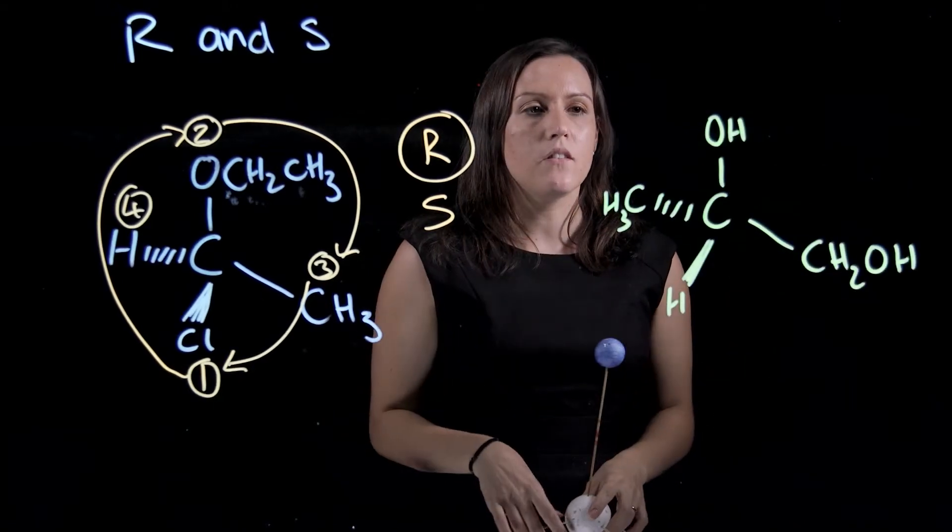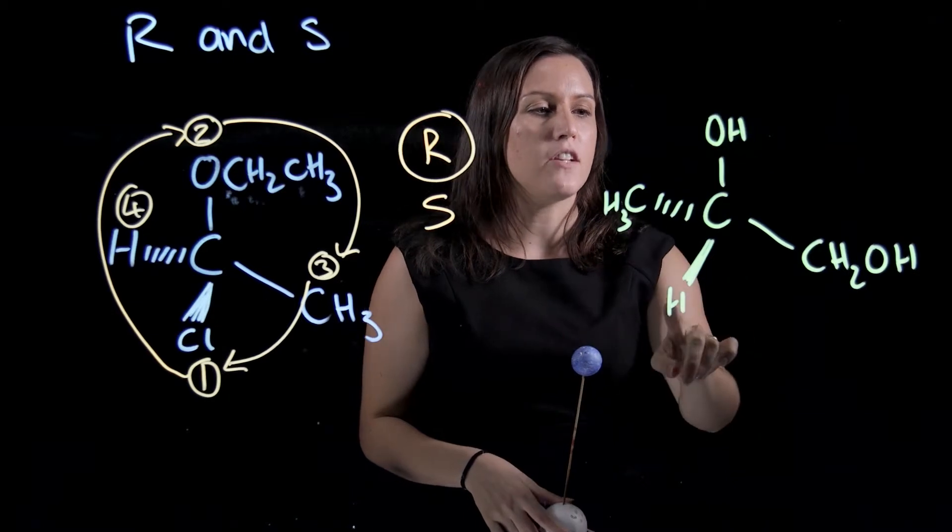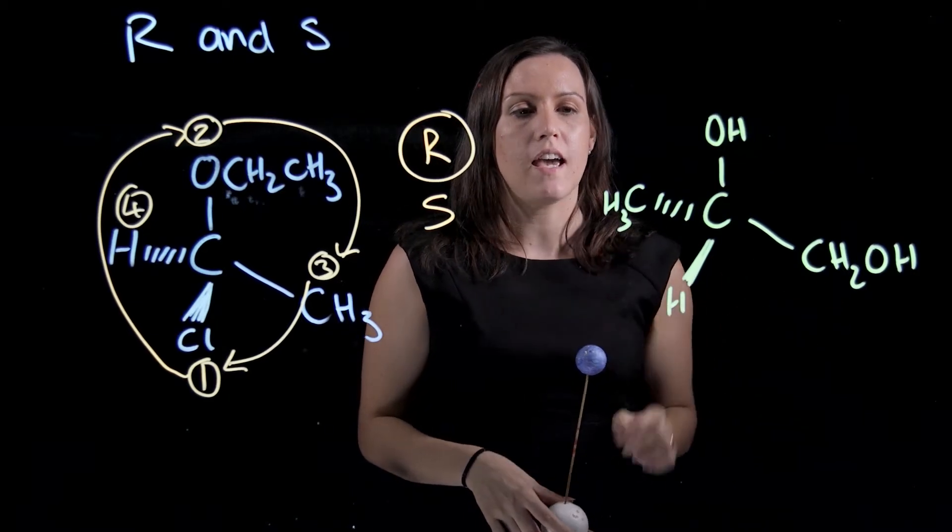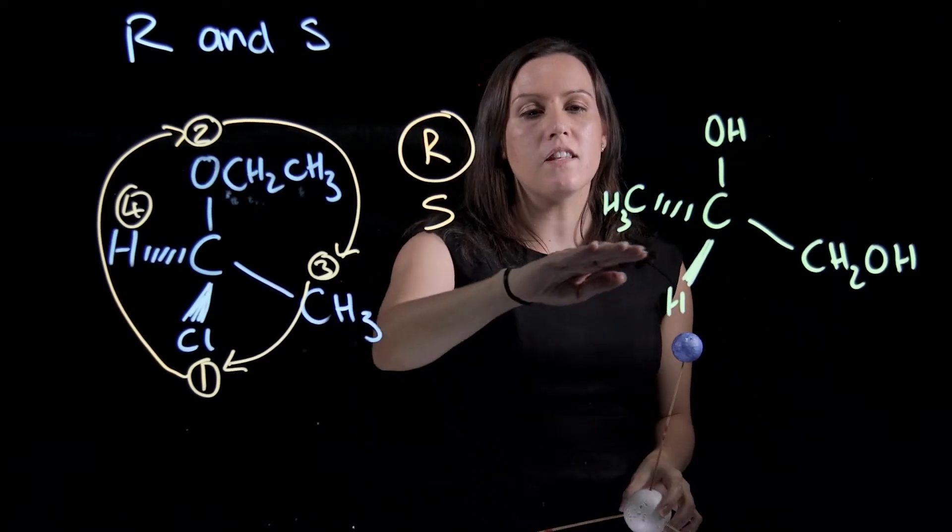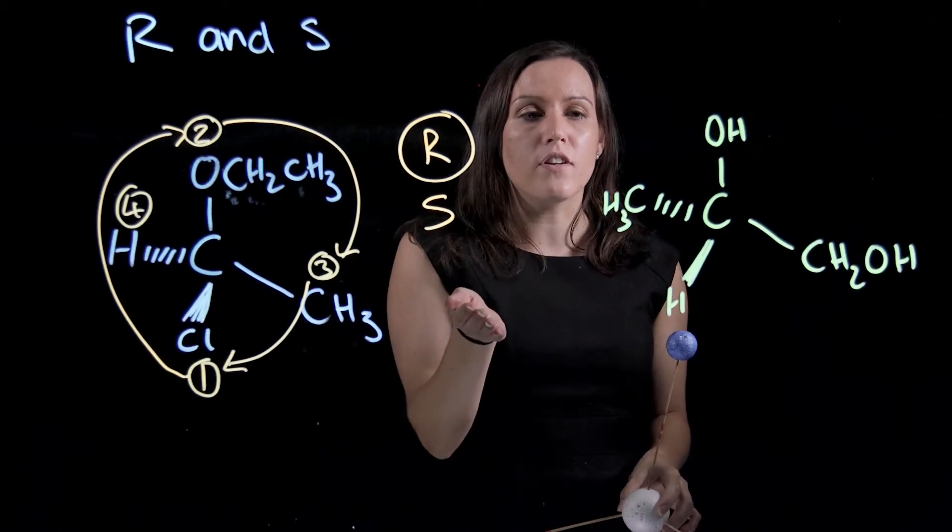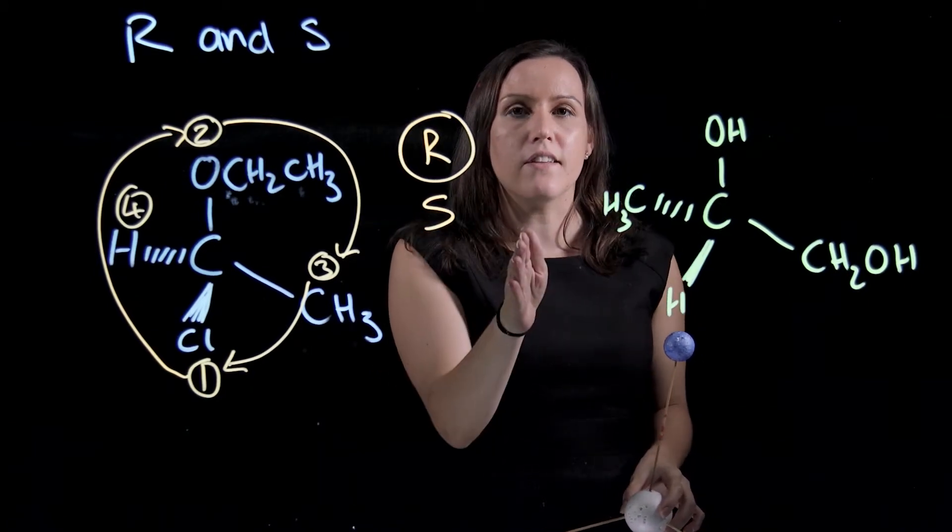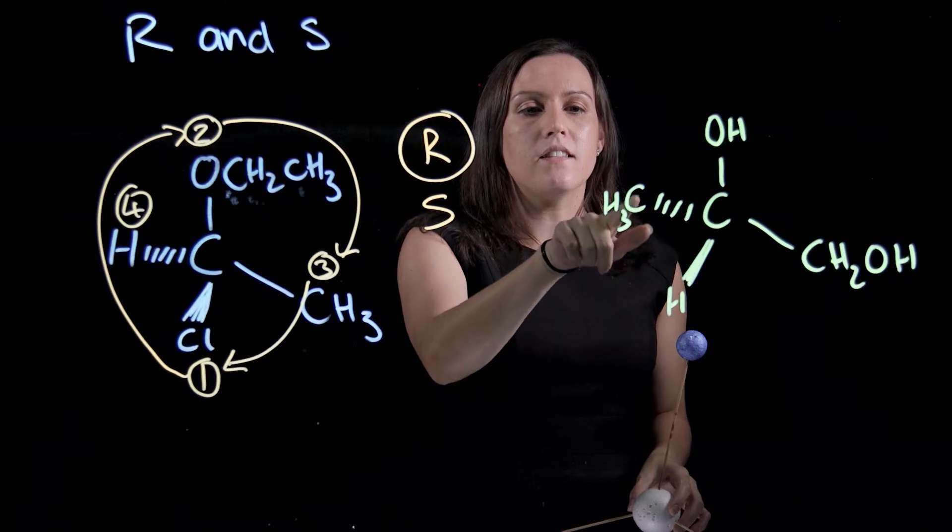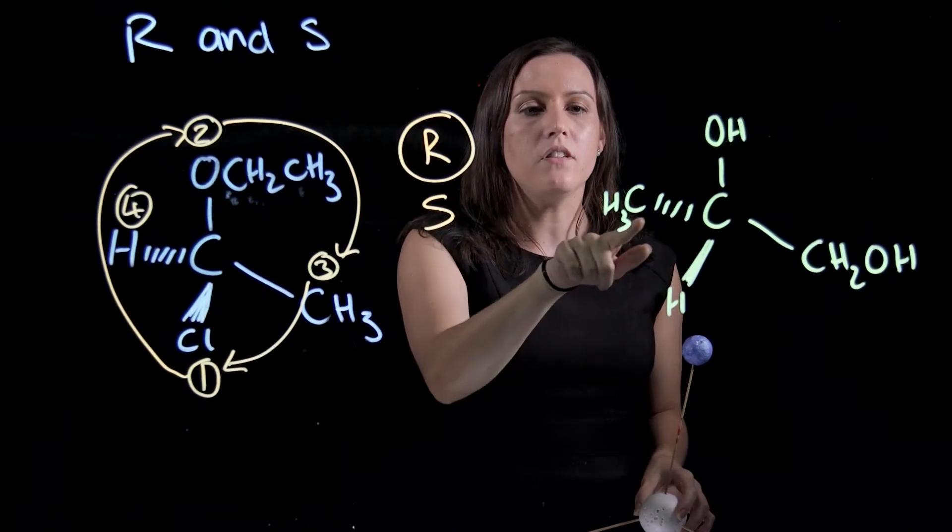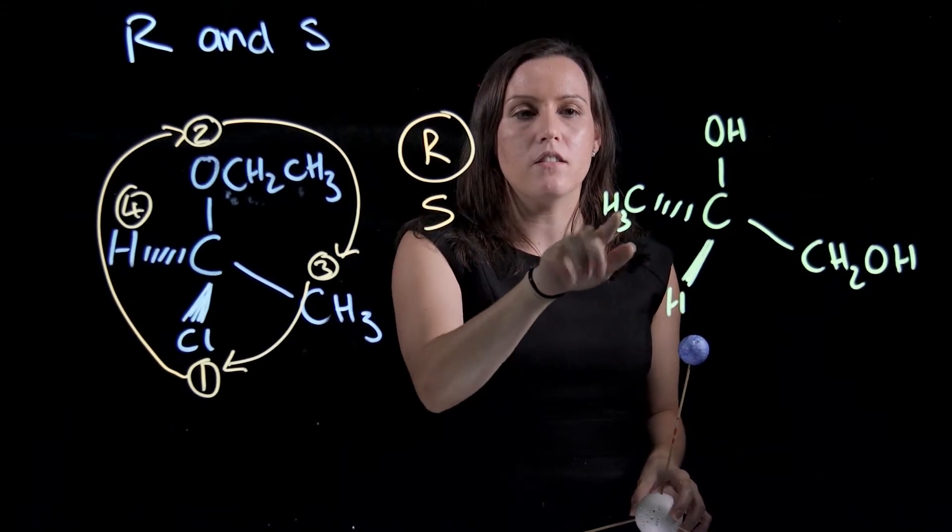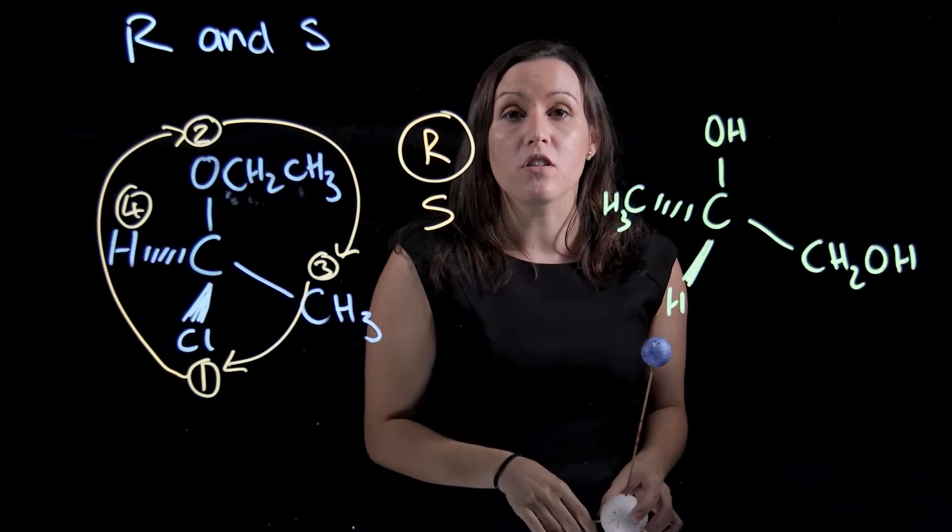With this example here, we have an OH, a hydrogen, a CH2OH, and a CH3. You'll notice that this CH3 is written in reverse. Because it's on the other side of the molecule, we write it as the carbon that's bonded to that carbon, and then we write the H3. So we show the order of bonding within the molecule.